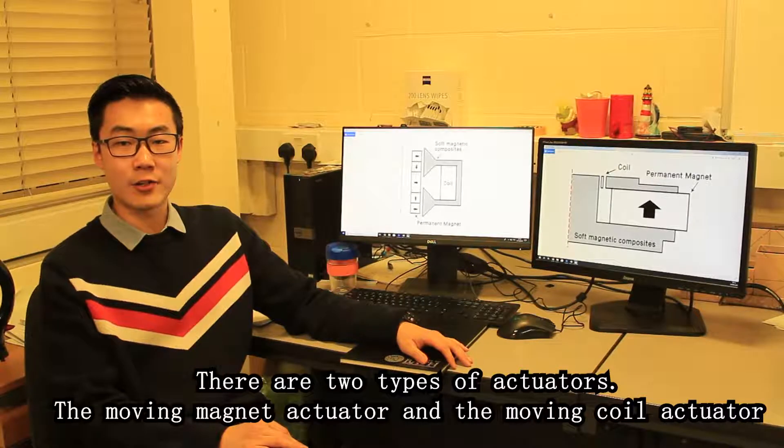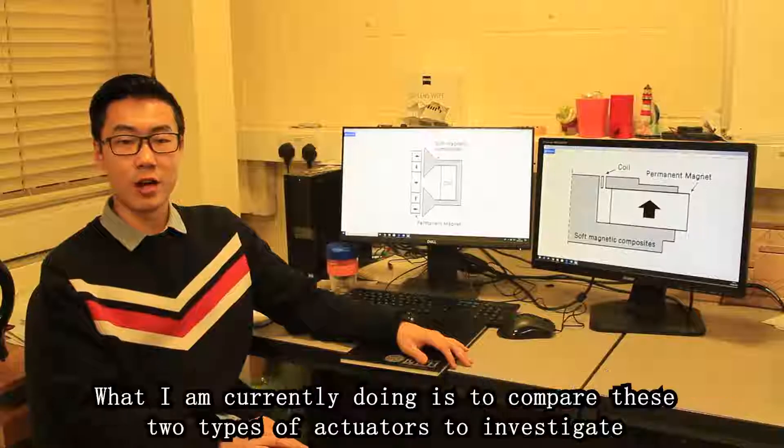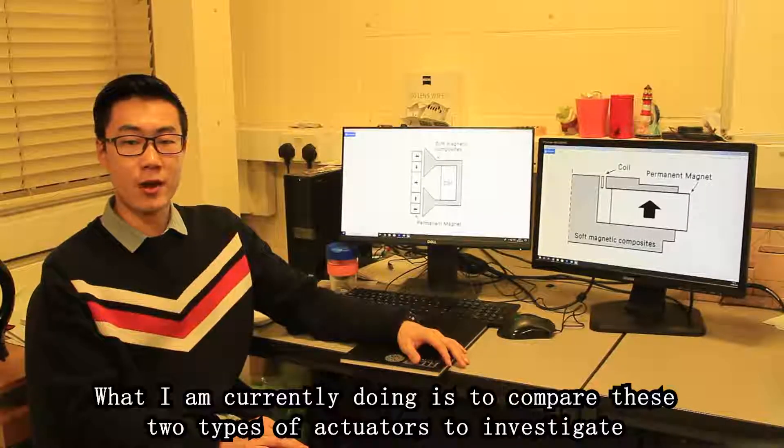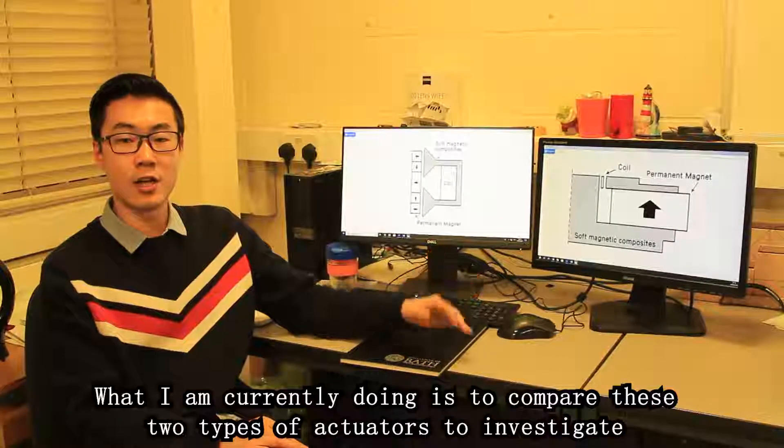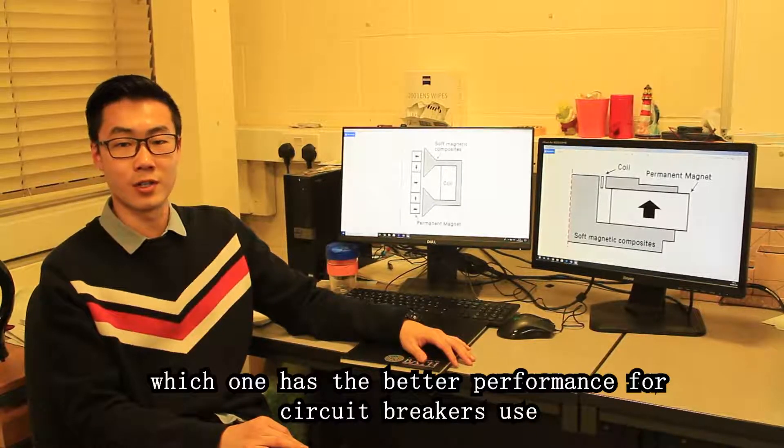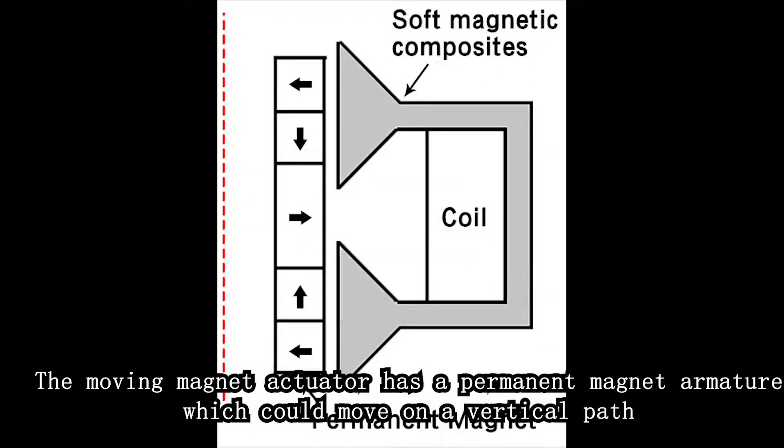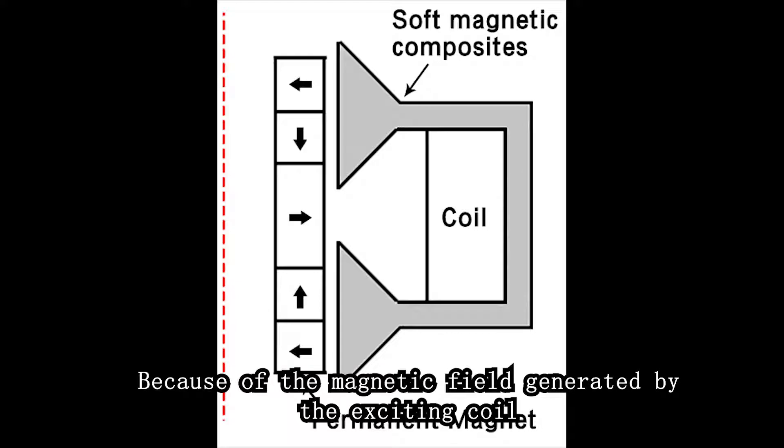There are two types of actuators, the moving magnet actuator and the moving coil actuator. What I am currently doing is to compare these two types of actuators to investigate which one has the better performance for circuit breaker scenes. The moving magnet actuator has the permanent magnet armature which could move on a vertical part because of the magnetic field generated by the exciting coils.